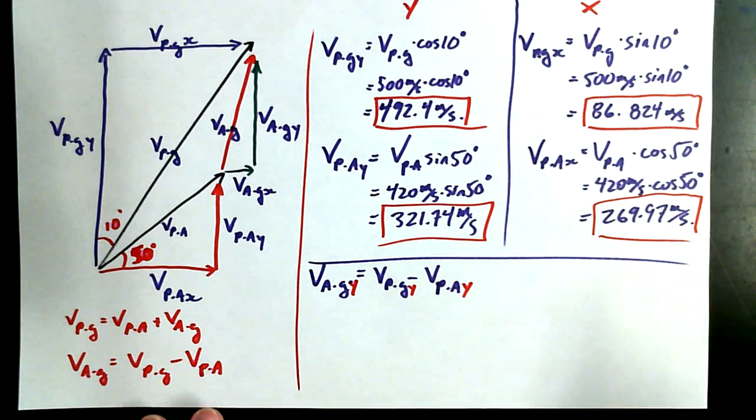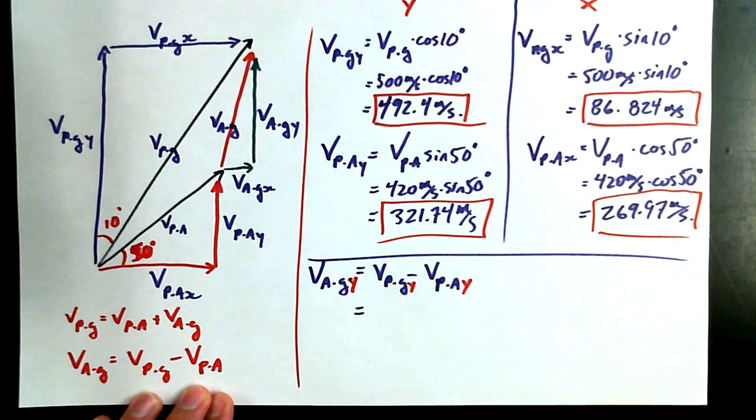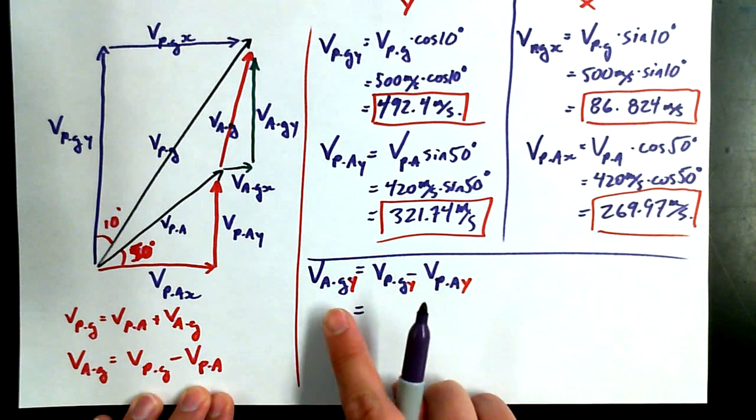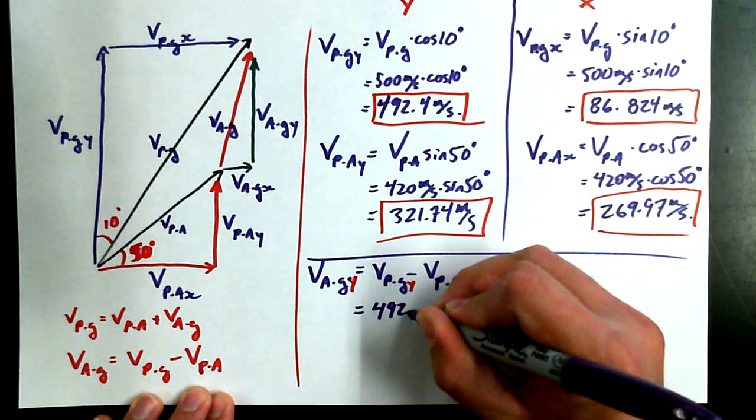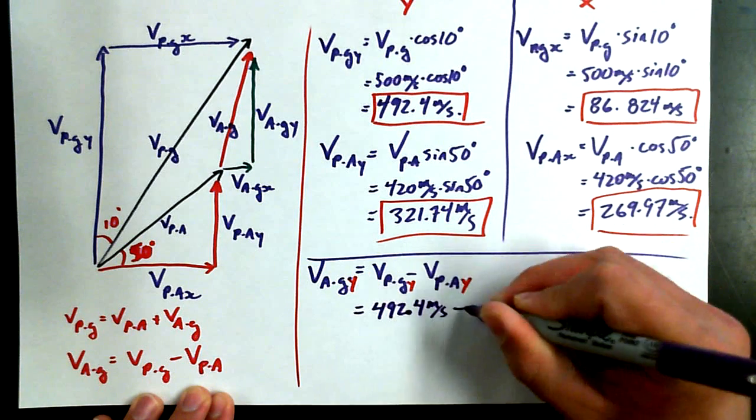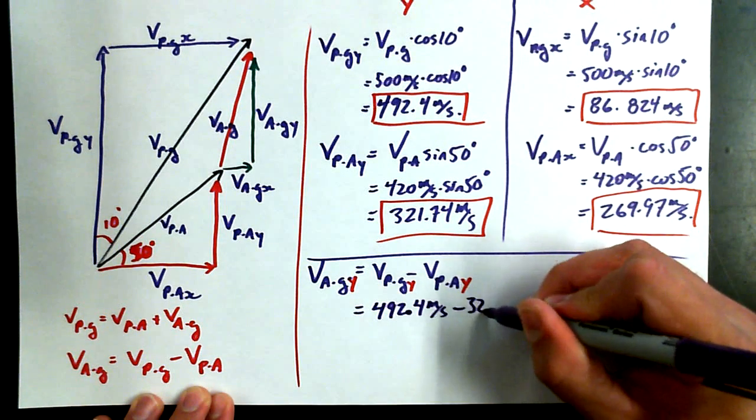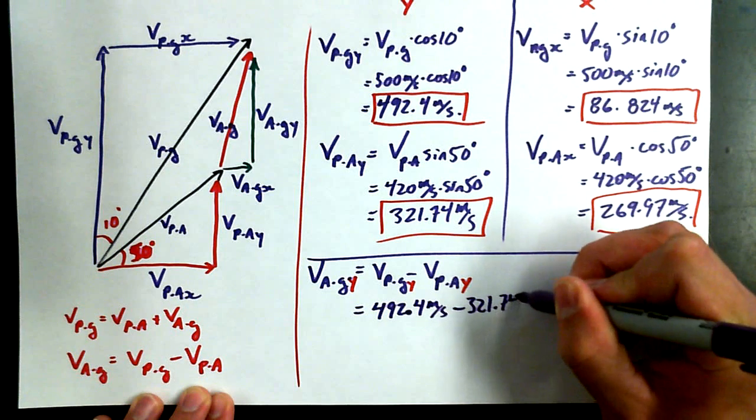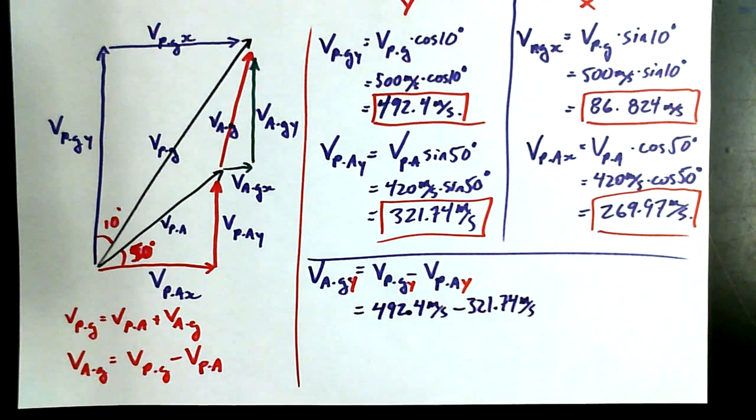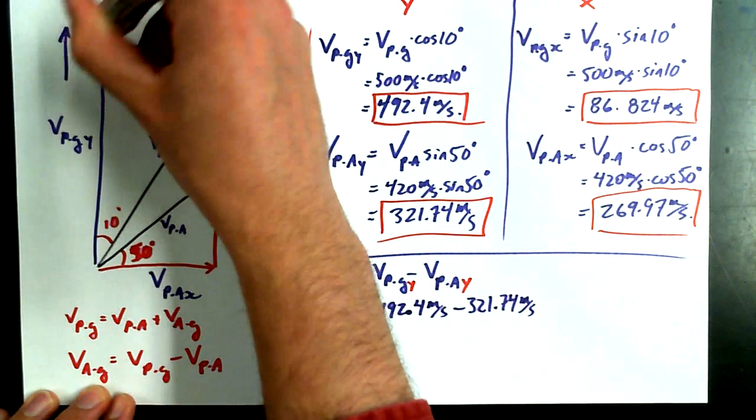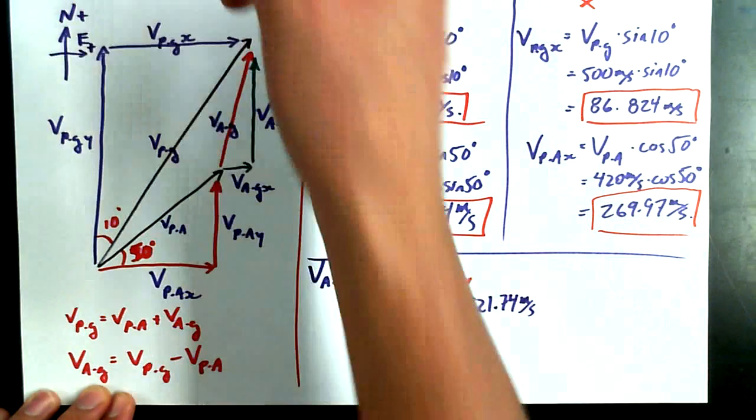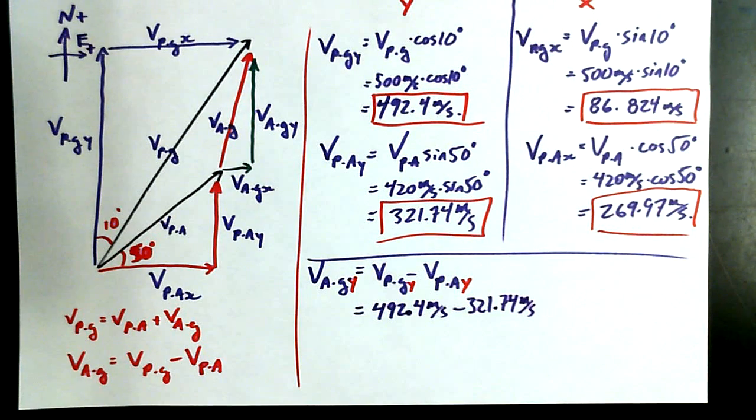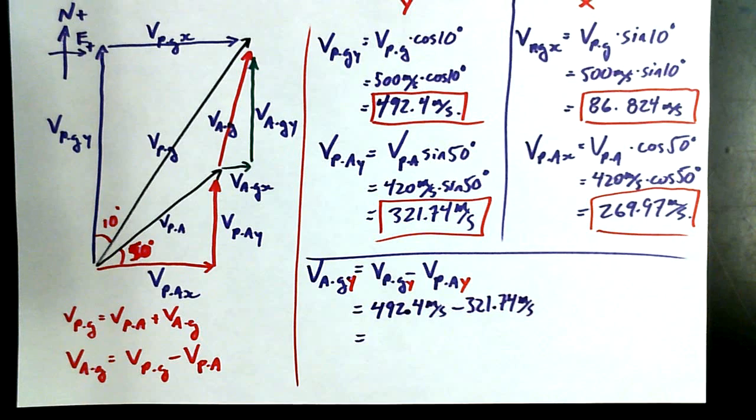Let's plug in some values here then, okay? So V, P, G in the Y direction is going to be equal to V, P, G, Y, which we, or sorry, V, A, G in the Y direction is going to be equal to V, P, G, Y, which we wrote here already, 492.4 meters per second, minus V, P, A in the Y direction, which was 321.74 meters per second. And you know what I didn't really think about before to communicate? But I would have lost marks if this was a test. We should have made north positive and east positive so that our signs make sense here. My mistake. I would have been big marks off.